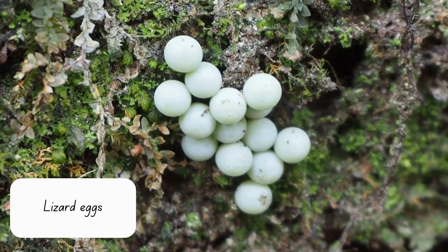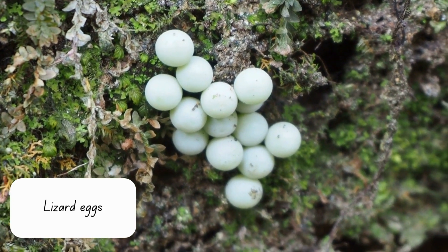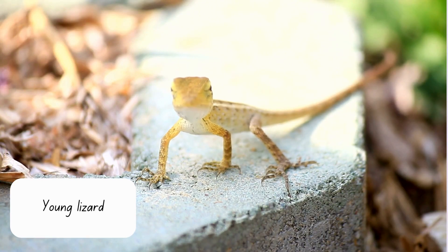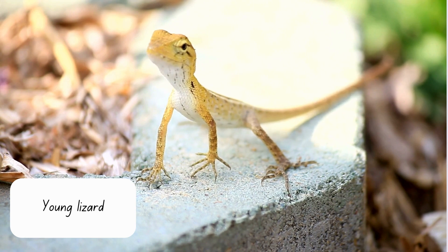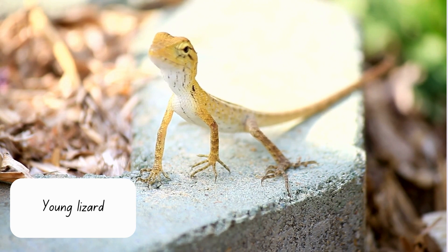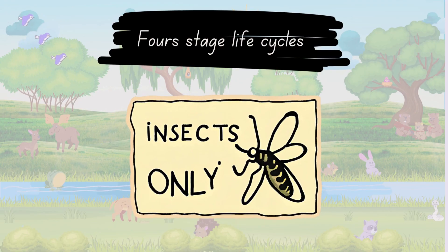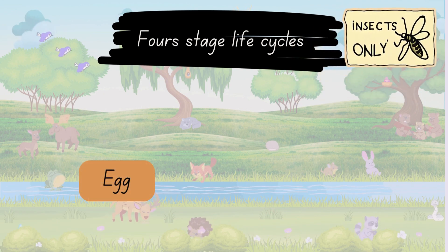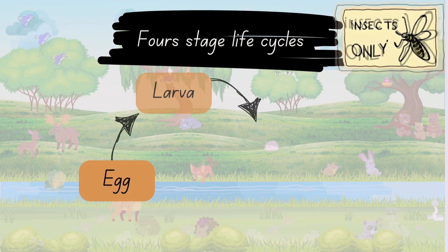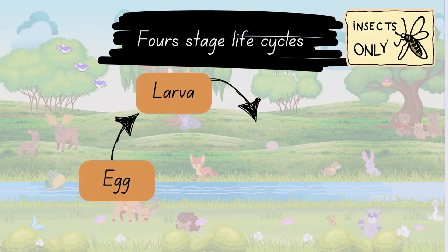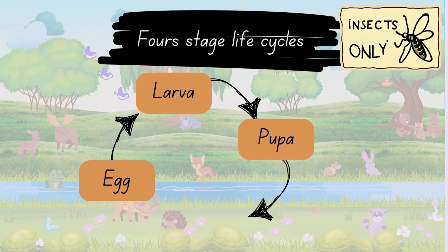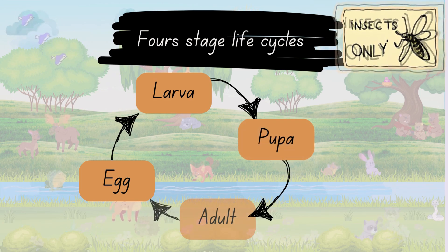There are many different types of life cycles. Some insects undergo metamorphosis and have four-stage cycles. The stages in a four-stage life cycle of an insect are egg, larva, pupa, adult.